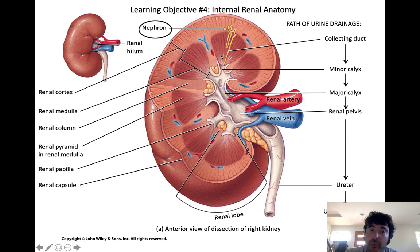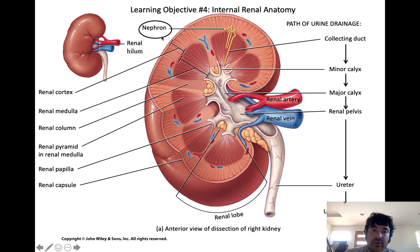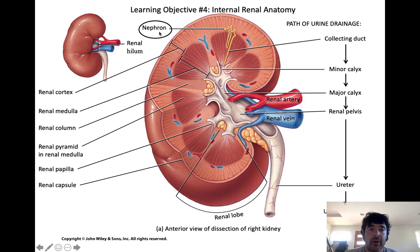The most important structures in the kidney — those that actually do the work — are microscopic. These structures have just been drawn large in the textbook so you can see them. In each kidney there are about a million or more of these microscopic structures. They are called nephrons. If you see a nephrologist, you're seeing a kidney specialist, and nephrology is a thriving area in medicine.